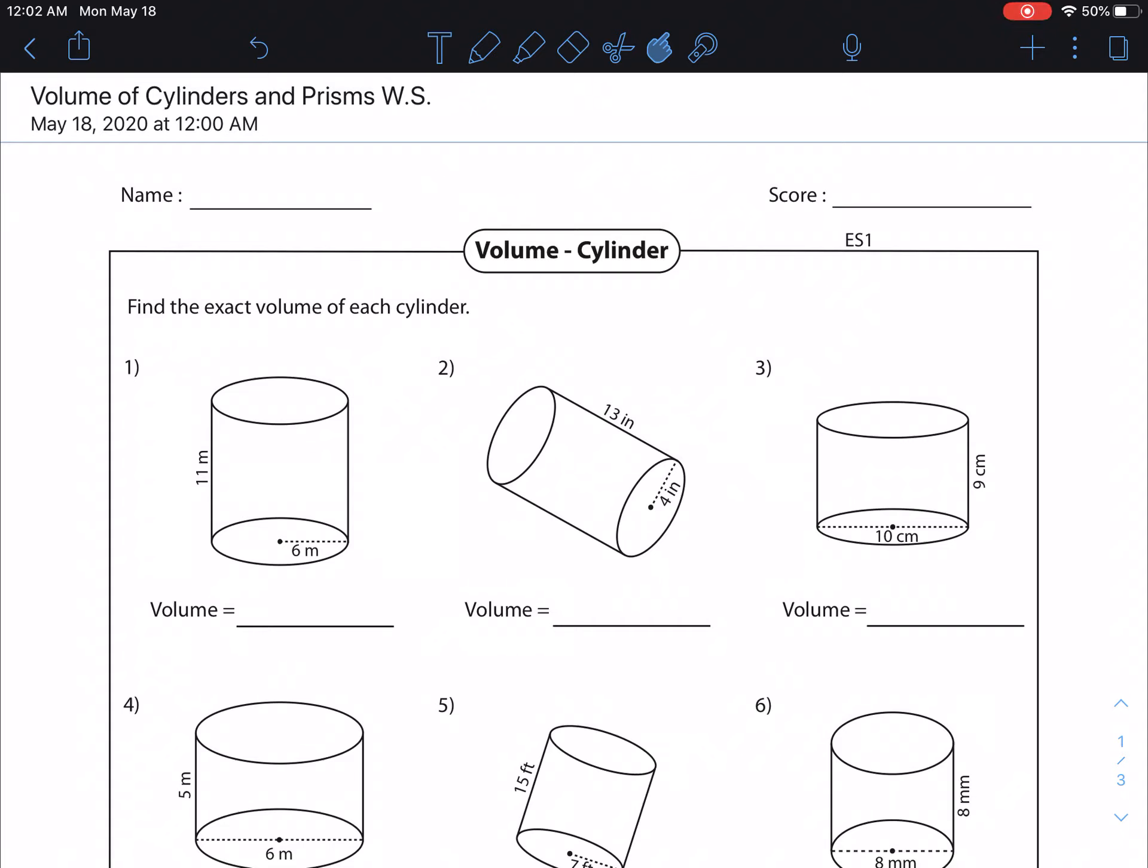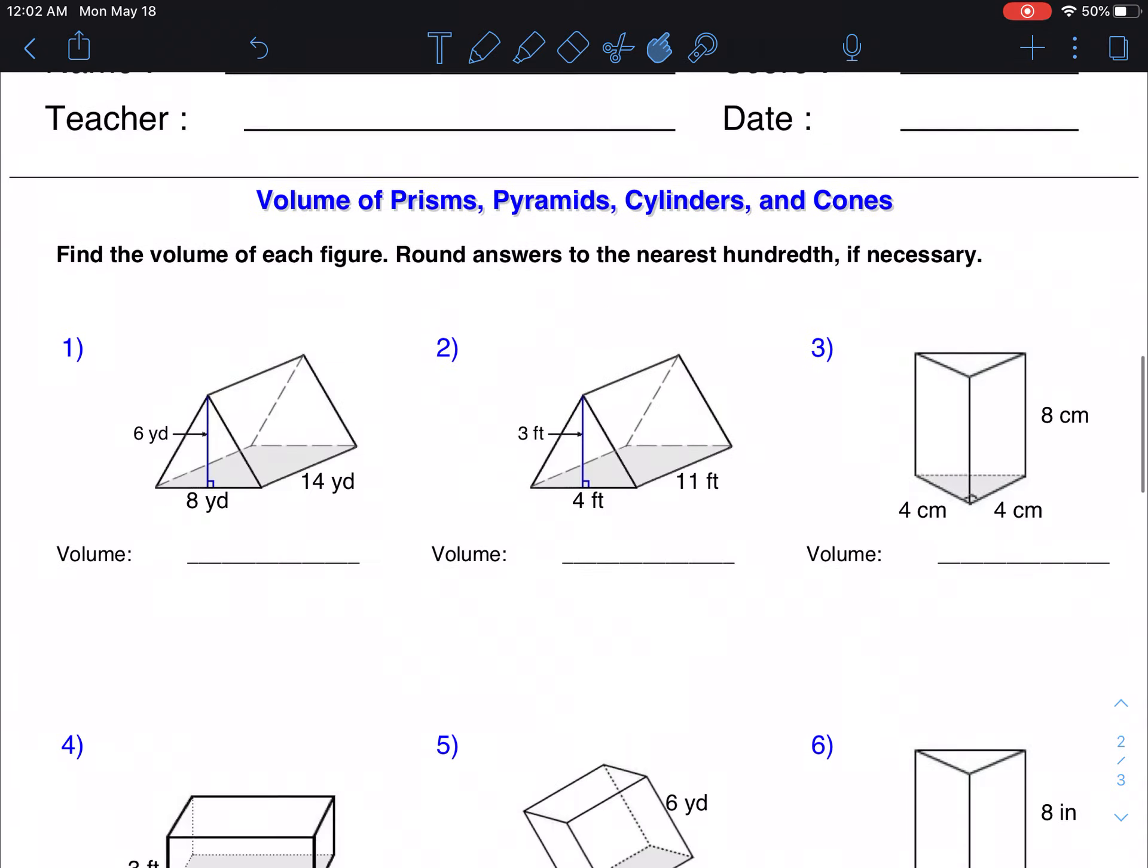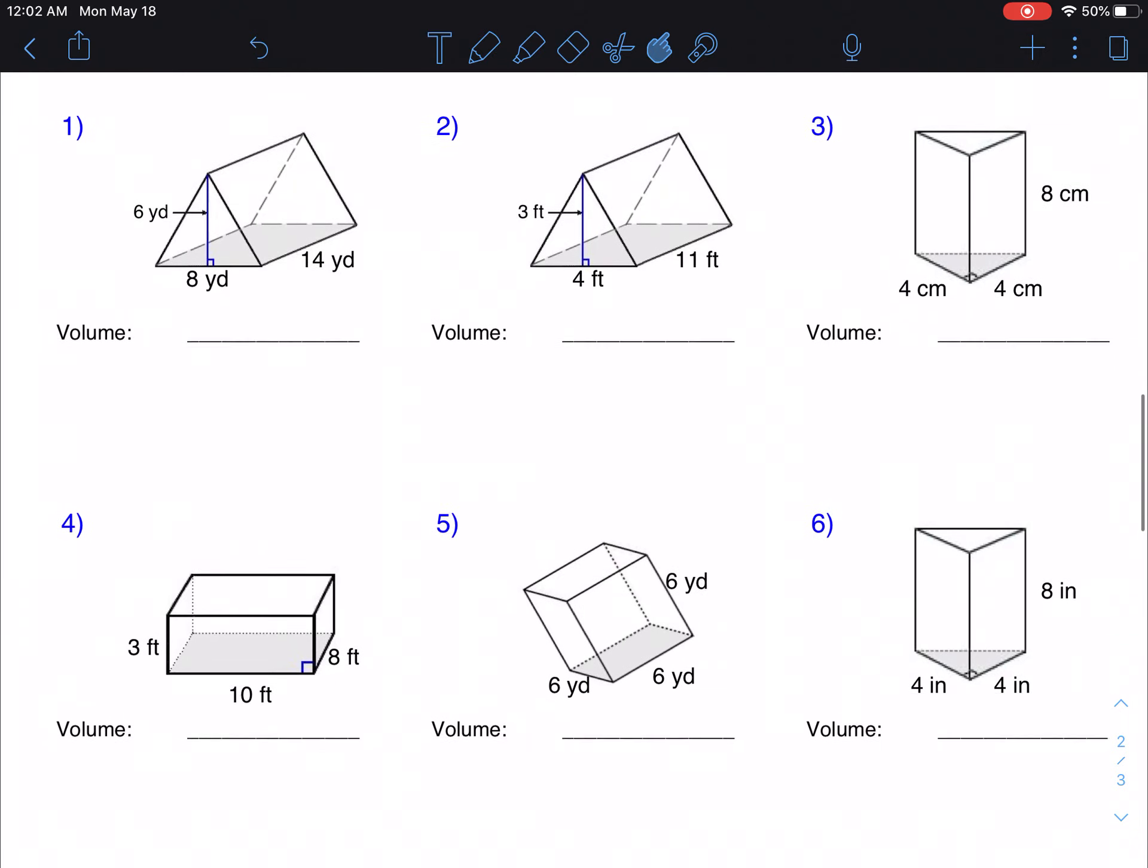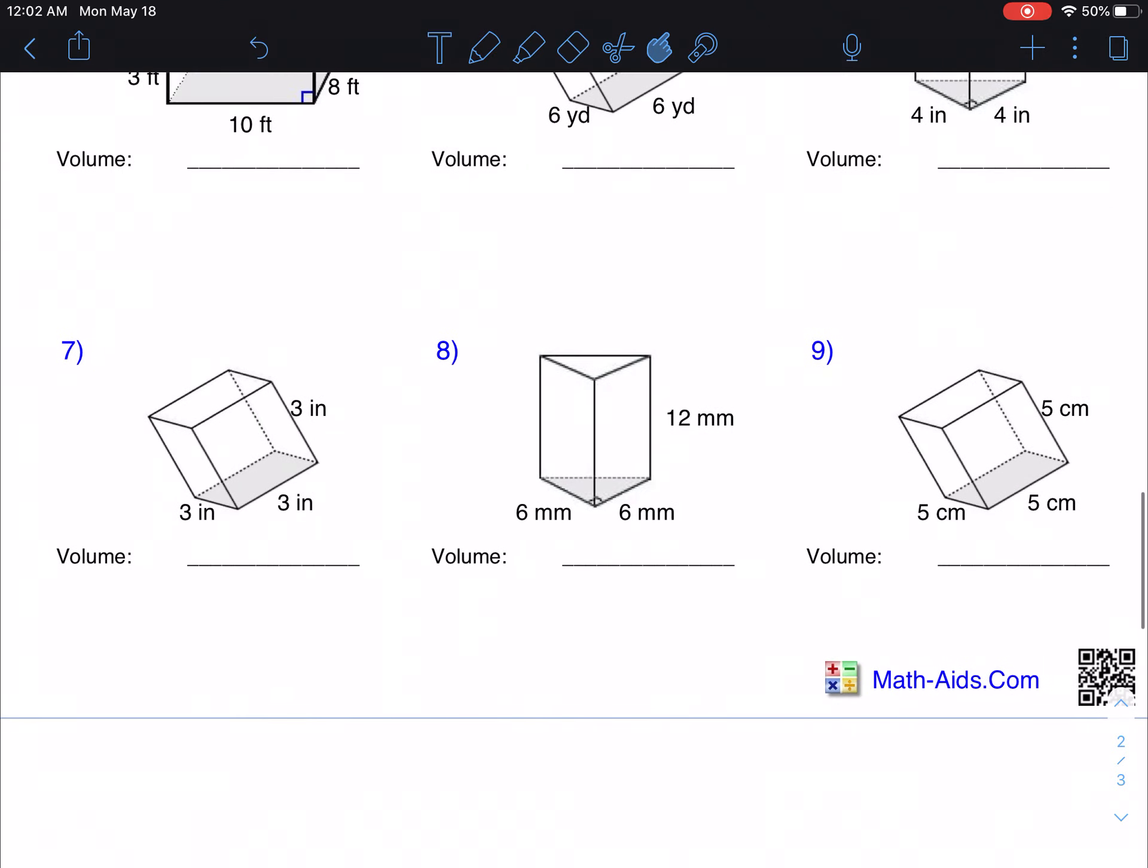Okay guys, so entering a new chapter here and we are going to be covering volume mainly. And so the first assignment is going to be the volume of cylinders and prisms. So down below you've got triangular prisms and rectangular prisms.